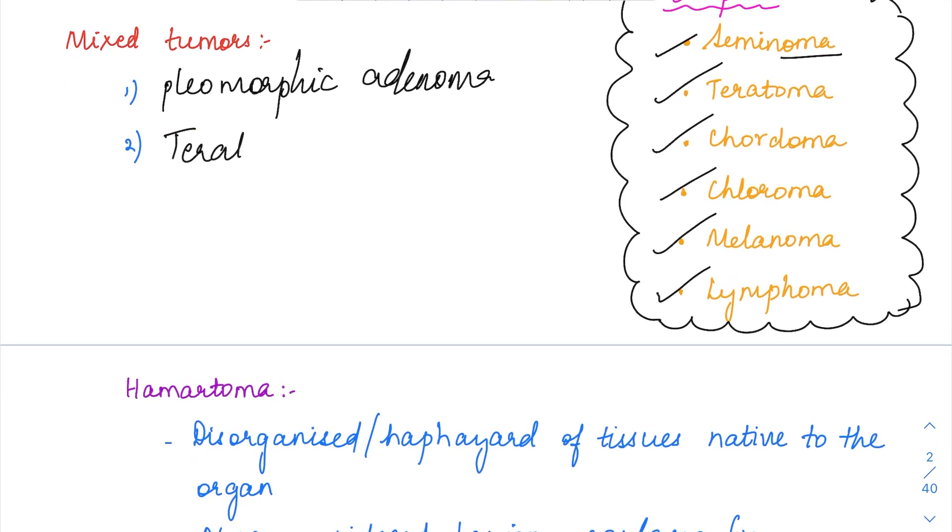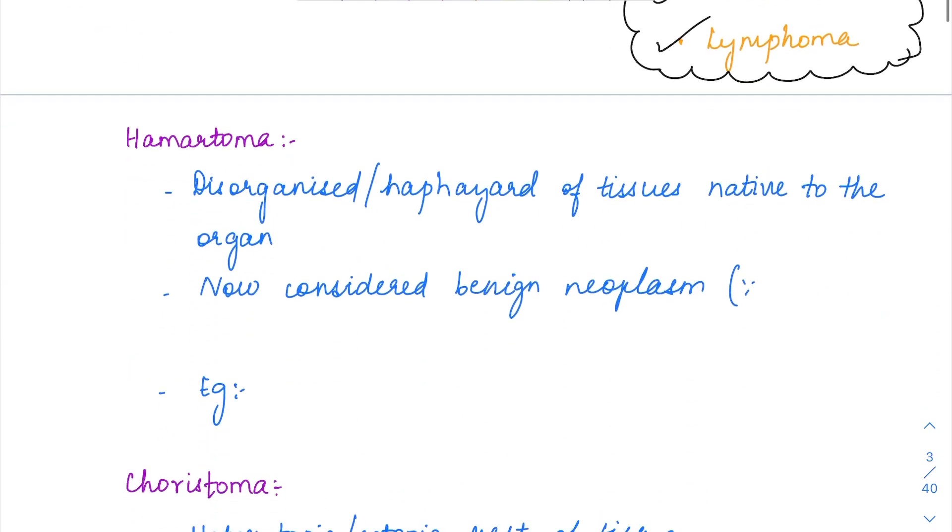And then we have teratoma also. Teratoma is a combination of tumor arising from all the three germ cell layers. That is, it is from the epithelium, endoderms and also from the mesenchymal tissue. All of this is going to form the teratoma. These are examples of mixed tumors.